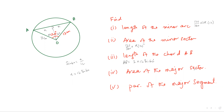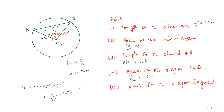Then it says area of the major sector. You only need to find this angle, which is going to be 240 degrees. So area of the major sector is going to be 240 over 360 times pi into 12 squared. Now suppose if you had to find the area of the major segment, then you had to add the triangle area into it. Area of the major segment would be area of the major sector plus area of the triangle, which is half into 12 into 12 into sine of the inclusive angle, that is sine 120.